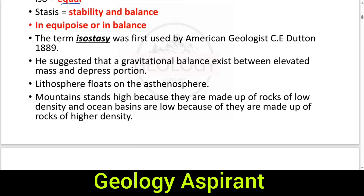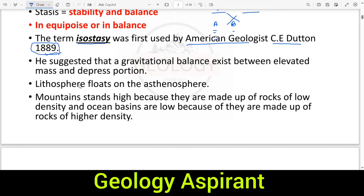The term 'isostasy' was first coined by American geologist C.E. Dutton in 1889. This is important to remember for entrance exams where matching questions appear. Dutton suggested that a gravitational balance exists between elevated masses — such as mountains — and depressed features like basins, meaning gravitational force is balancing all these features.